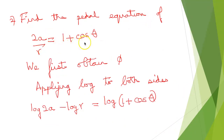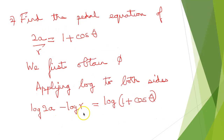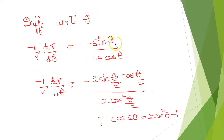Find the pedal equation of the curve 2a/r = 1 + cos θ. We first obtain φ. Apply log to both sides: log(2a) − log r = log(1 + cos θ). Differentiating with respect to θ, the left side gives −(1/r)(dr/dθ). The derivative of cos θ is −sin θ, and using the identities sin θ = 2 sin(θ/2) cos(θ/2) and 1 + cos θ = 2 cos²(θ/2), the denominator reduces to 2 cos²(θ/2).